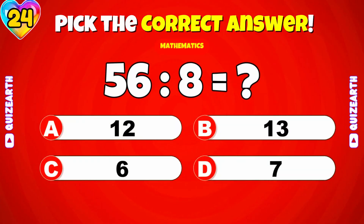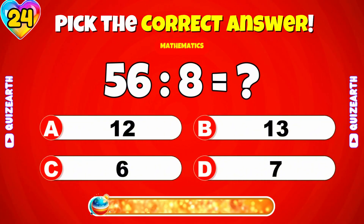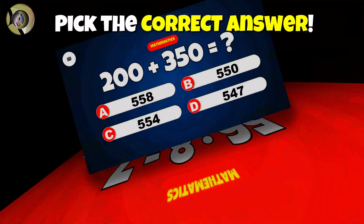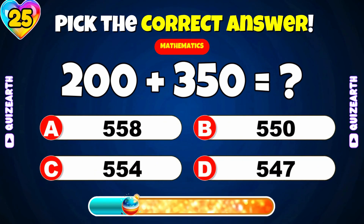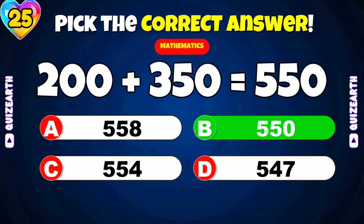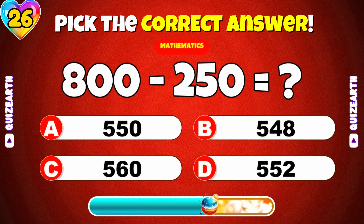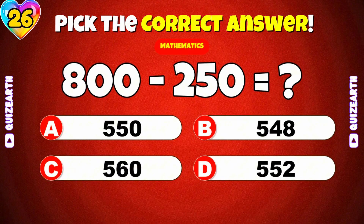What is 56 divided by 8? Awesome, 7. What is 200 plus 350? 550. What is 800 minus 250? 550.